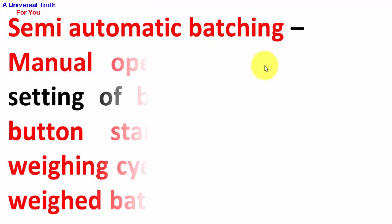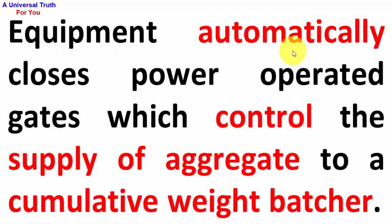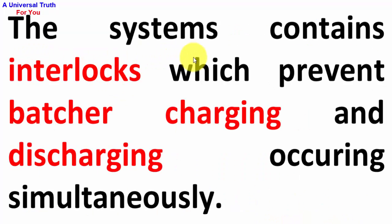Semi-automatic batching: manual operations include the setting of batch weights, push-button starting of the automatic weighing cycle, and release of the weighed batch to the mixer. Equipment automatically closes power-operated gates which control the supply of aggregate to a cumulative weight batcher. The system contains interlocks which prevent batcher charging and discharging from occurring simultaneously.